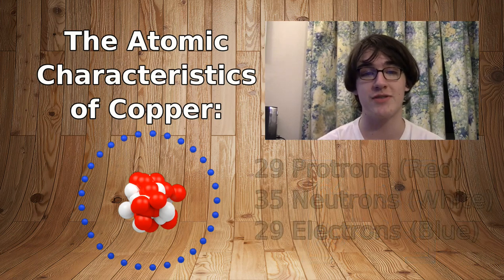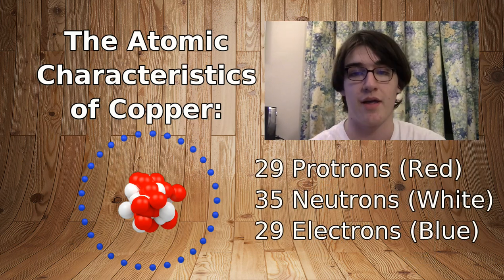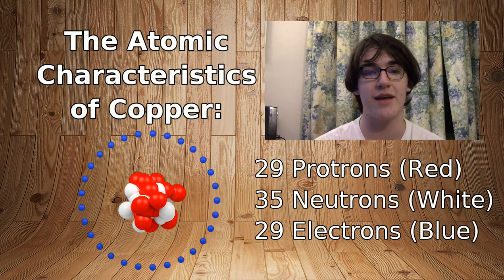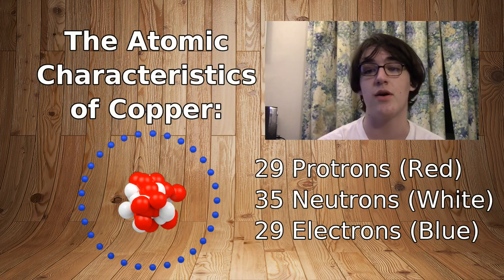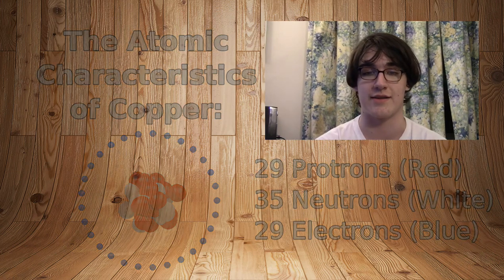There are 29 of both protons and electrons. This is represented by the atomic number. There are also 35 neutrons in the nucleus. This can be calculated by removing the atomic number, or the amount of protons, from the atomic mass, the amount of subatomic particles in the nucleus.